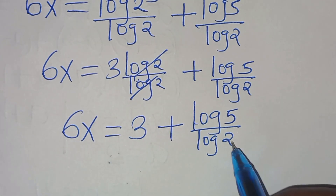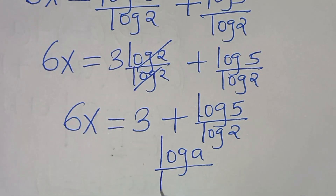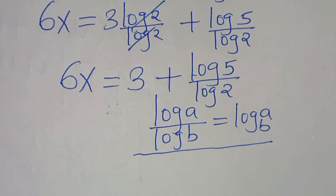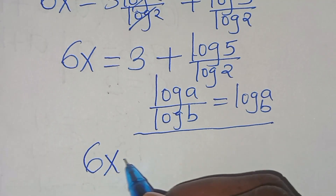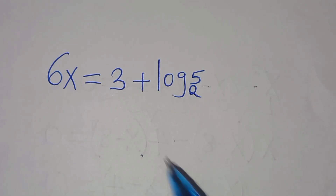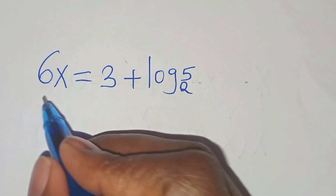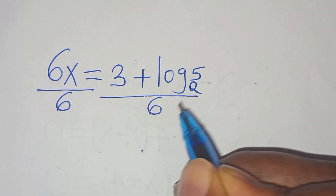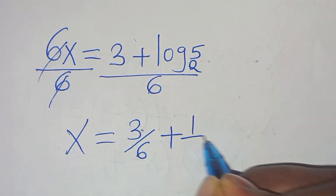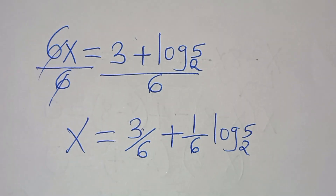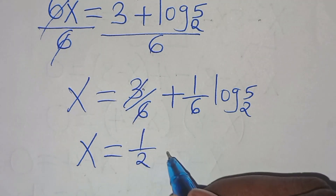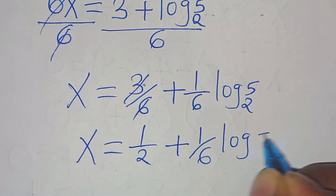Now log 5 over log 2 is in the form of log a divided by log b, which we can express as log of a to base b. Applying this change-of-base property, we have 6x equal to 3 plus log 5 to base 2. Dividing both sides by 6, we have x equal to 3 over 6 plus 1 over 6 times log 5 to base 2. Simplifying 3 over 6 gives one half, so x equals one half plus 1 over 6 times log 5 to base 2.